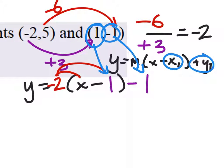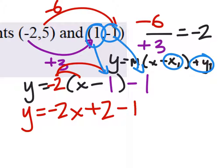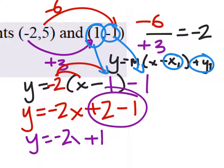Okay yeah, and that gives us y equals negative 2x plus 2 minus 1. And so y equals negative 2x, just combining our two like terms, plus 1.